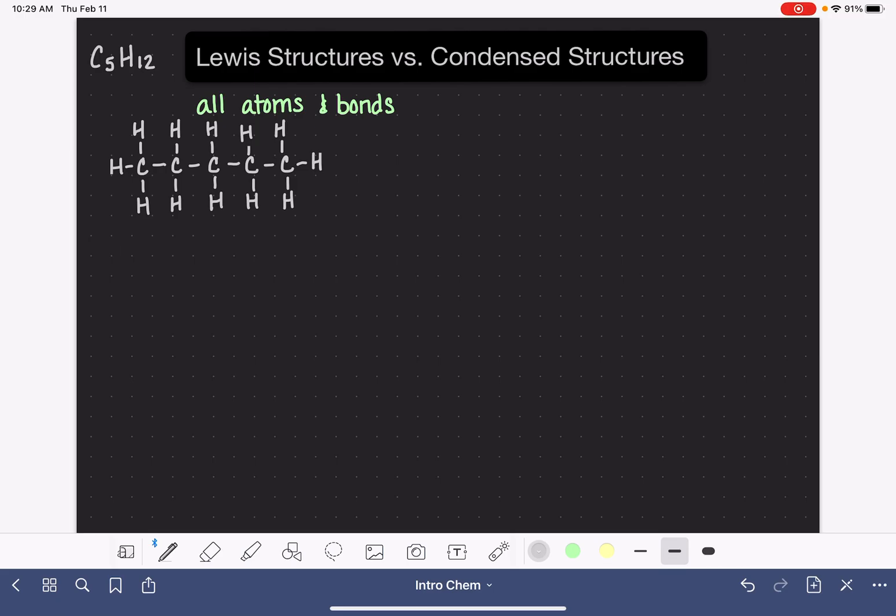They're really descriptive. They give us a ton of information. The problem with the Lewis structure is that they're really big and bulky. Drawing all of those atoms and all of those bonds takes up a lot of space.